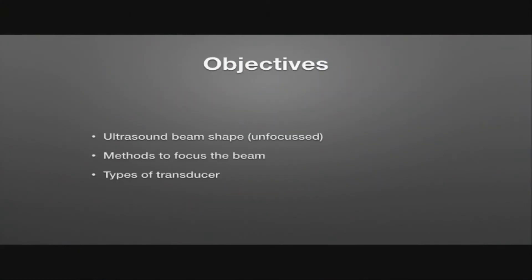Hello, this is the second lecture regarding ultrasound transducers and beam forming concepts. In this lecture we're going to be talking about what the ultrasound beam shape looks like, firstly for unfocused ultrasound beams, and then we'll talk about ways that we can try and focus the beam to try and improve the resolution of the image. And we'll talk about the ways that different types of transducers use the ultrasound crystals to try and focus the beam.